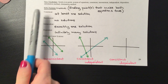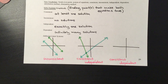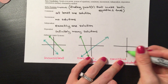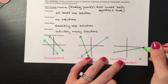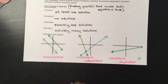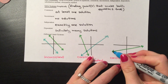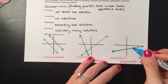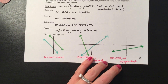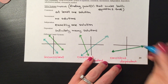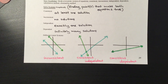Finally, what it means to be consistent and dependent: if there are infinitely many solutions, that means the lines are intersecting over and over again. The only way for lines to intersect an infinite number of times is for them to be the exact same line. Every single point along the line technically qualifies as an intersection point.